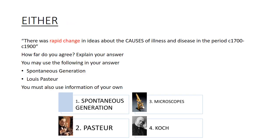So say, for example, there's this question: 'There was rapid change in ideas about the causes of illness in the 17th to the 1900s — how far do you agree?' That's quite a big claim, so make sure you quantify it at the beginning. What do we mean by 'rapid change'? You'd talk about spontaneous generation and Pasteur's germ theory — those are the two stimulus points given — but you'd also include your own information about microscopes and the work of Koch, bringing that together. Always make sure you are challenging, agreeing, or disagreeing with the actual statement.